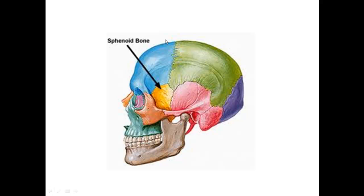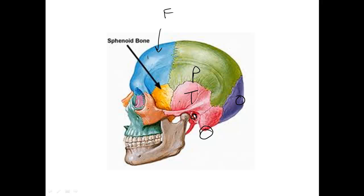You should be practicing as much as you can. Up here we have a frontal bone. This is parietal, occipital, temporal. Here we have the mastoid process, the external auditory meatus, and the zygomatic arch.